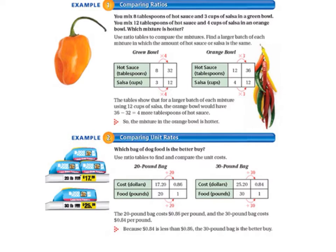Use ratio tables to compare the mixtures. Find a larger batch of each mixture in which the amount of hot sauce or salsa is the same.